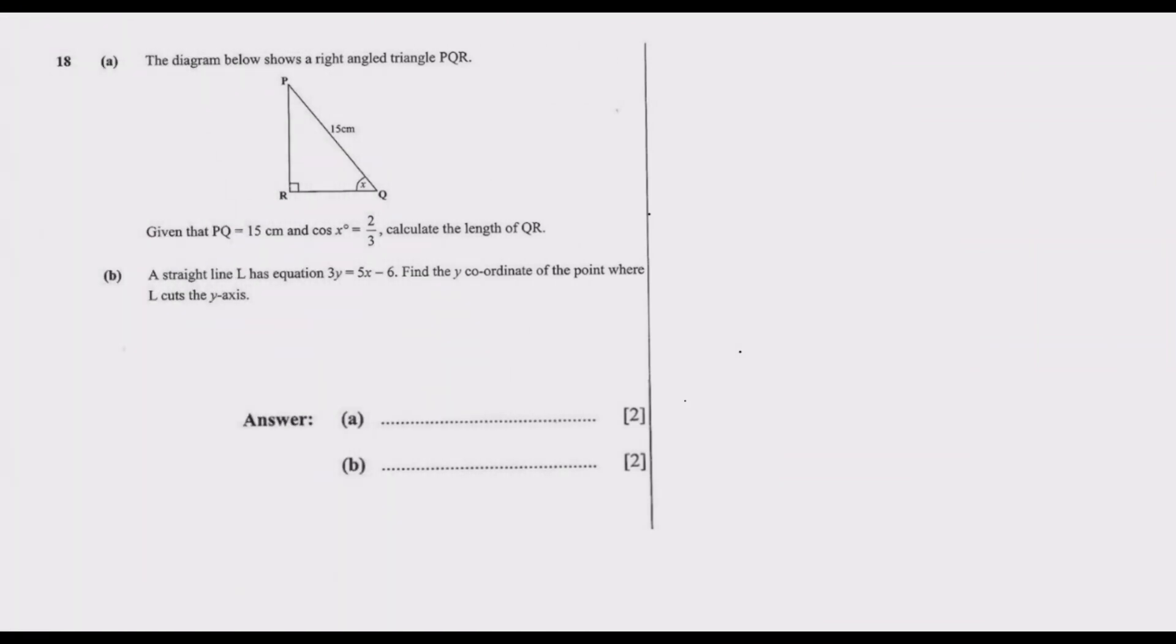Welcome to the eighth episode in which we've been looking at the 2020 GCE Mathematics C paper one. In the first seven episodes we've looked at questions 1 through 17, so in this episode we are starting with question 18. Question 18 reads: the diagram below shows a right-angled triangle PQR.